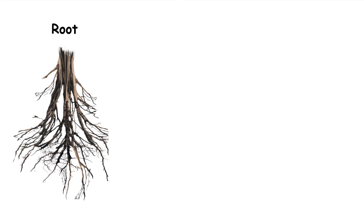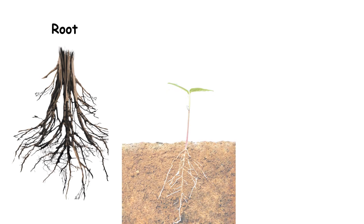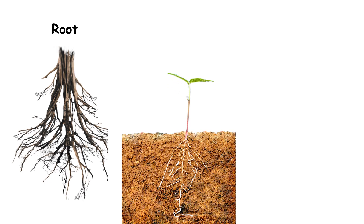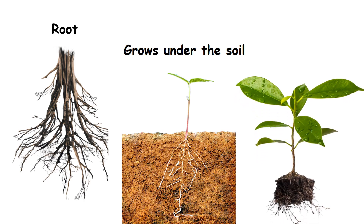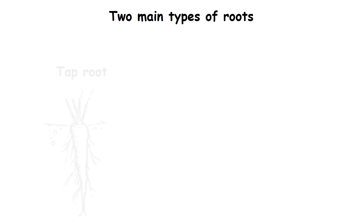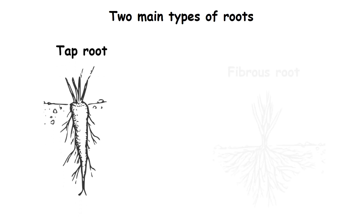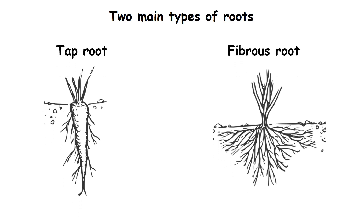Root. The root is a part of the plant that usually grows under the soil. Roots can be of different shapes and sizes. Roots are of two types: taproot and fibrous root.